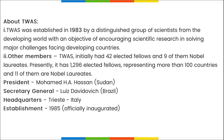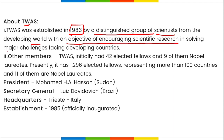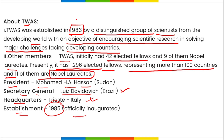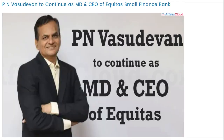TWAS was established in 1983 and officially inaugurated in 1985 by a distinguished group of scientists from the developing world. Initially it had 42 elected fellows, including nine Nobel laureates. Currently it has around 1,296 elected fellows representing over 100 countries, with 11 Nobel laureates. The President is Mohammed H.A. Hassan from Sudan, and the Secretary General is Luis David Wach from Brazil.